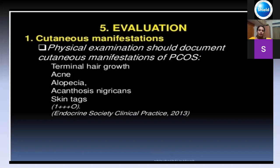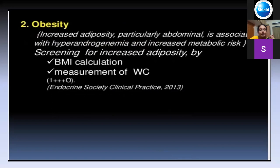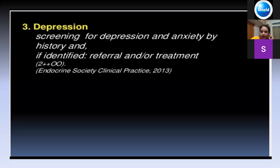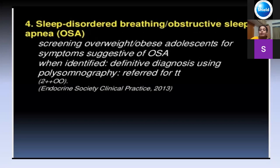For evaluation, first examine the patient thoroughly for terminal hair growth, acne, acanthosis, and skin tags. For obesity, calculate BMI and measure waist circumference — waist-to-hip circumference ratio greater than 0.85 is an important marker. Many of these girls have low self-esteem, depression, and anxiety, so if depression is diagnosed, take help from psychiatrists. They may also have obstructive sleep apnea syndrome.